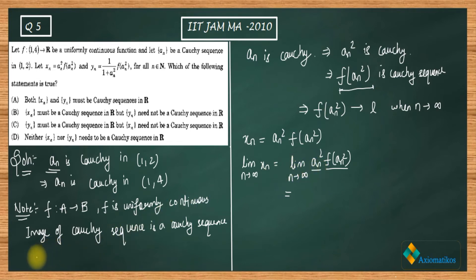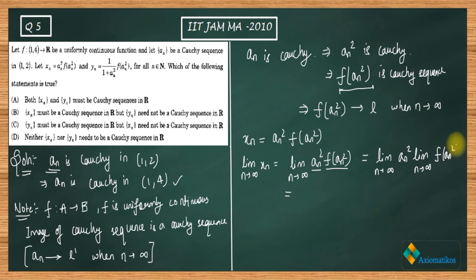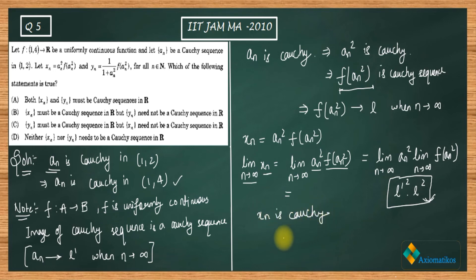Since {an} is a Cauchy sequence, it is convergent; let us say an → L' as n → ∞. So the limit of xn as n → ∞ equals the limit of an² · f(an²). Since both sequences are convergent, the limit separates: we get L'² · L. So xn converges, meaning xn is a convergent sequence, and since we are in ℝ, xn is also Cauchy.